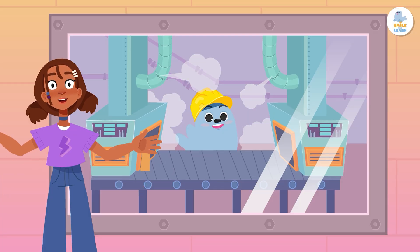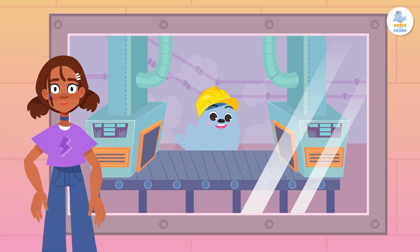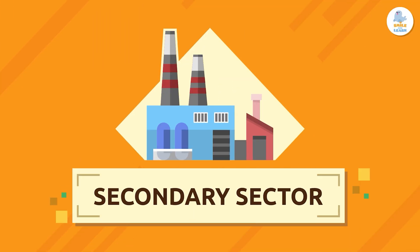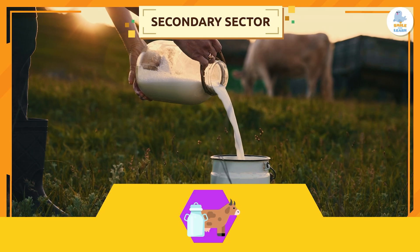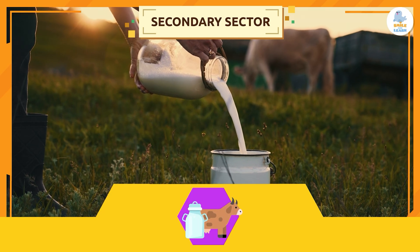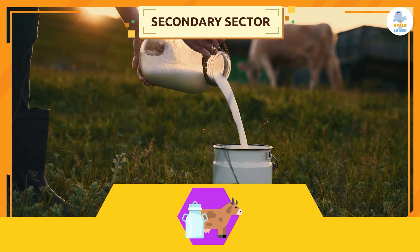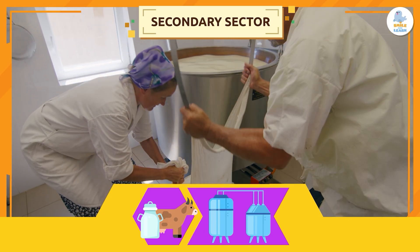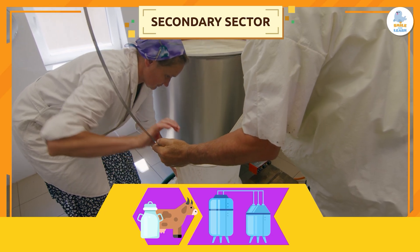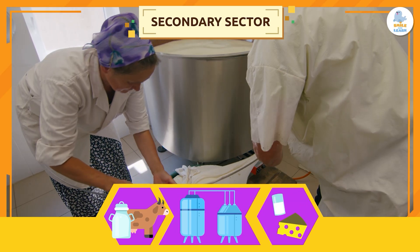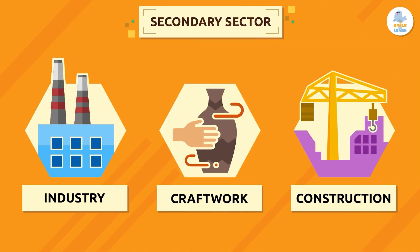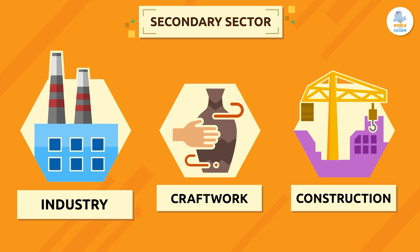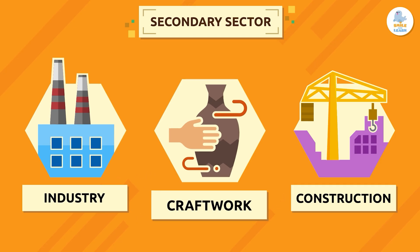Come with me and discover the secondary sector. The secondary sector, also known as the industrial sector, is responsible for transforming raw materials, or natural products obtained by the primary sector, into manufactured products. The main activities of the secondary sector are industry, craftwork, and construction.